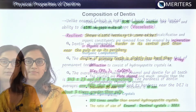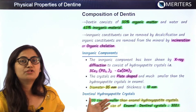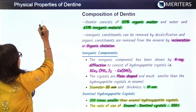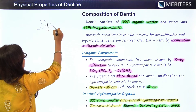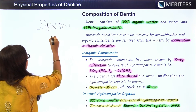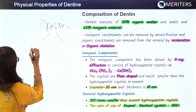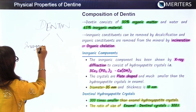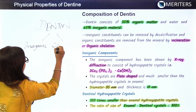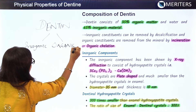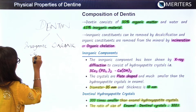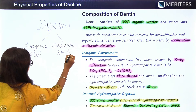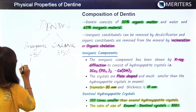Now covering the composition of dentine. Dentine is divided into two parts: the inorganic content and the organic content. Inorganic is 65% and organic is 35%. The inorganic portion comprises the minerals.